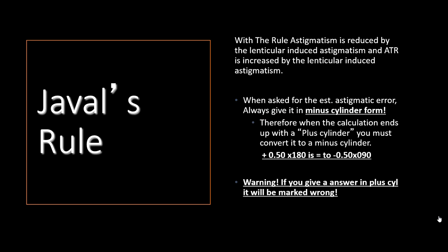When asked for the estimated astigmatism error, always give it in minus-cylinder form. Therefore, when the calculation ends with a plus-cylinder, convert it to minus-cylinder, and that's by switching the sign and then changing the axis 90 degrees. If you're in the wrong axis or the wrong cylinder, it will be marked wrong.